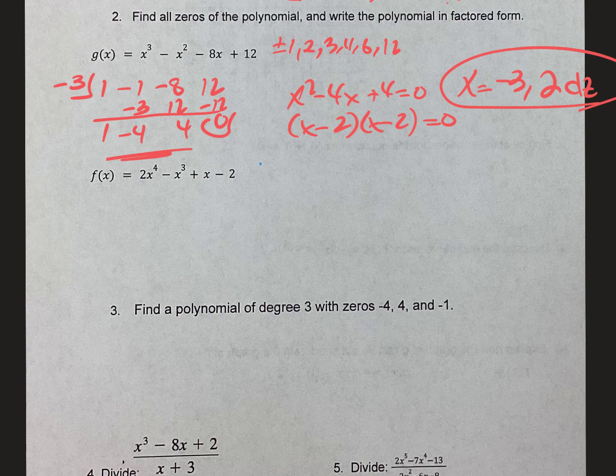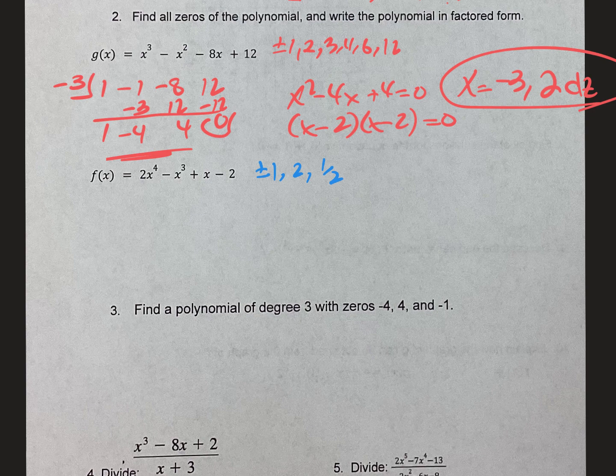So my zeros are negative 3, and 2 counts as a double zero. Sometimes we put dz or dr after for double root. But as long as you have negative 3 and 2, you're good. Also notice the graph bounced right there. It bounced because it has what we call multiplicity 2 or an even exponent. It's squared. Alright, the second part, number 2, make a list again. So I'm going to plus or minus 1 over 1 and 2 over 1, 1 over 2, and 2 over 2. And again, I'm going to punch this in my calculator.